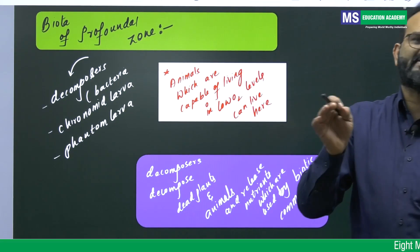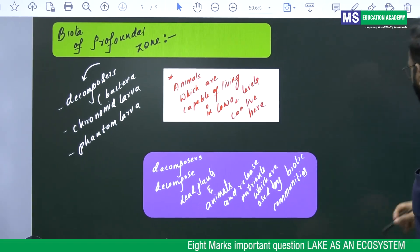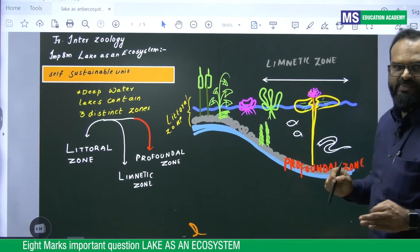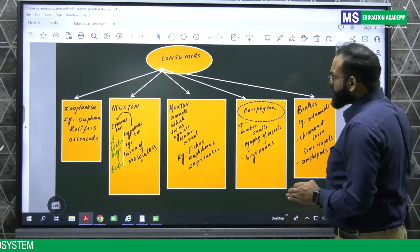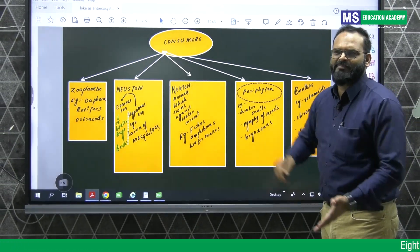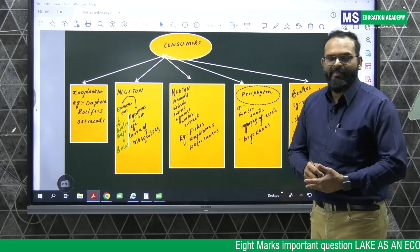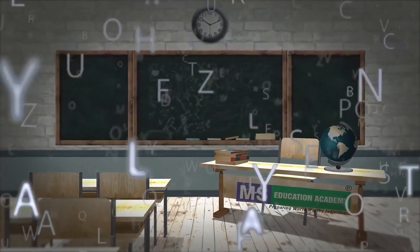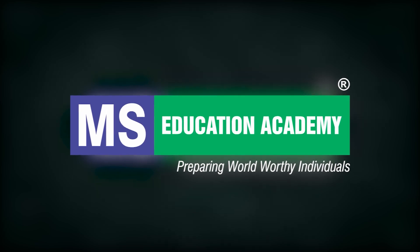So that's about lake as an ecosystem students. Important 8 marks question. If this question is asked in exam, so you can watch this video, draw these simple diagrams and write these mind maps present in your exam paper, so that you can impress your examiner and score maximum marks. All the best students. MS Education Academy Preparing World Worthy Individuals.